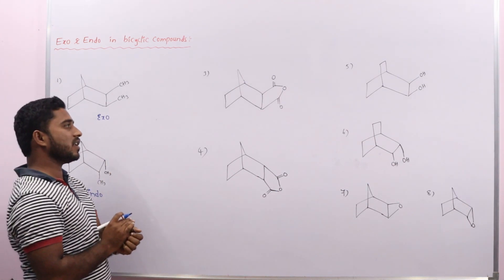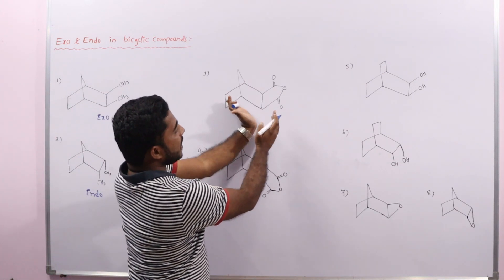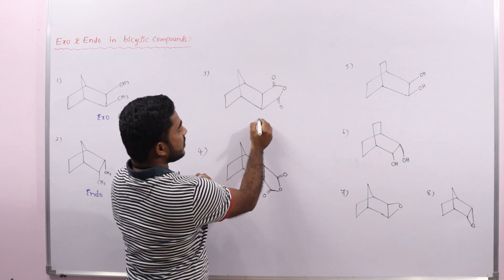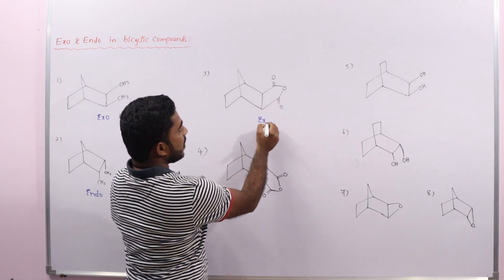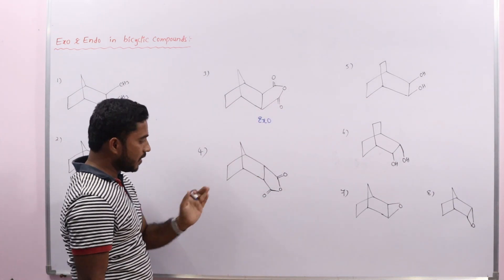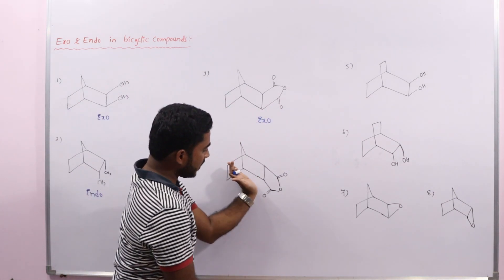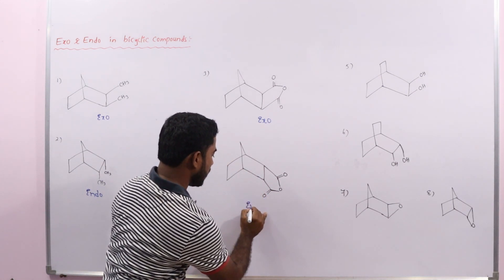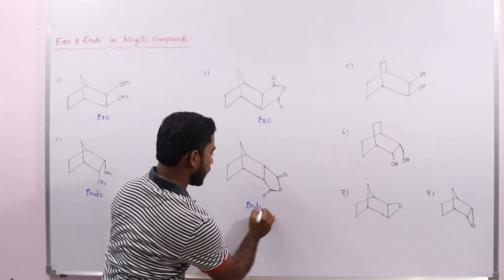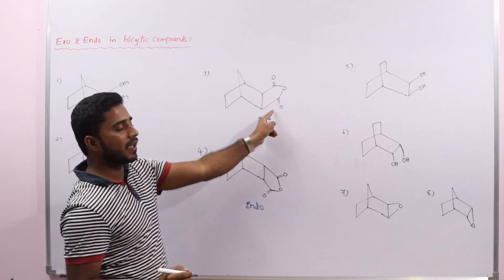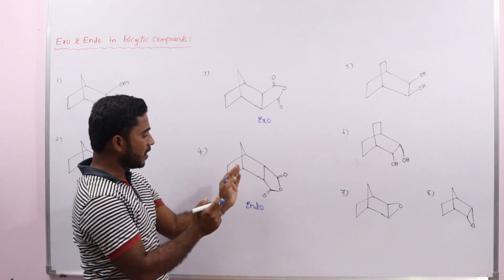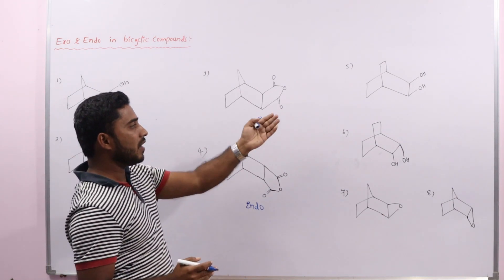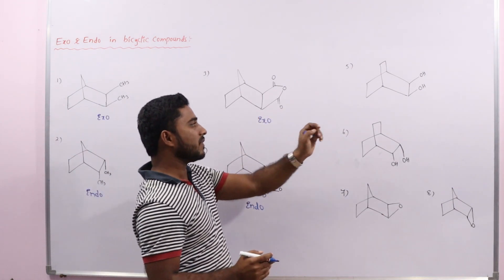In the next example, ring and one more ring are on the same side — ring and ring same side — that's why we call it exo. In this example, this ring and this ring are opposite, so we call it endo. Two rings same side means exo; two rings opposite means endo.